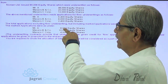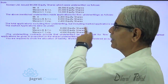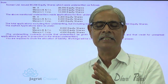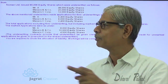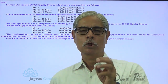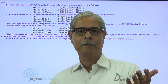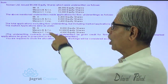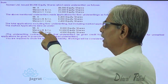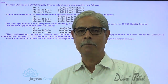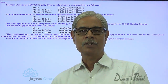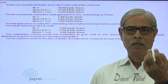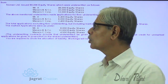Marking implies that the application was received by the company because of the efforts of the broker. The marked application of A is 8,000 — so 8,000 equity share applications received by the company bear the stamp of A. The marked application of B is 10,000, meaning 10,000 applications were received because of B's efforts. By the efforts of C, 4,000 applications are received. These are the marked applications showing the efforts of the underwriters in obtaining subscriptions.